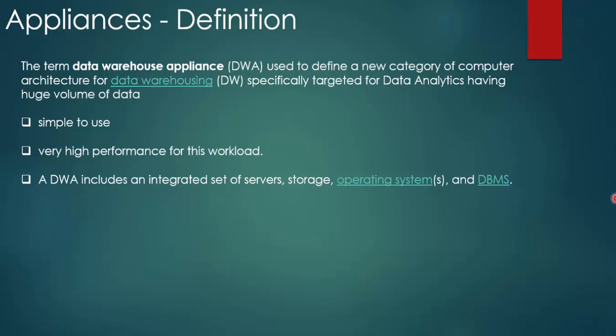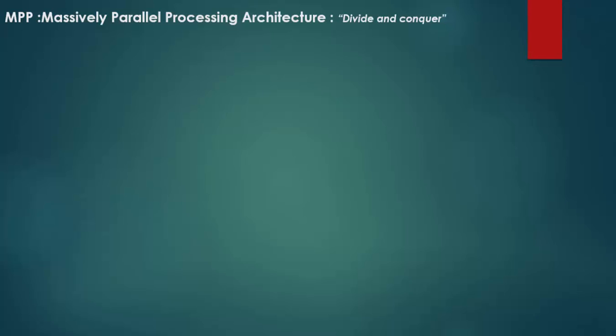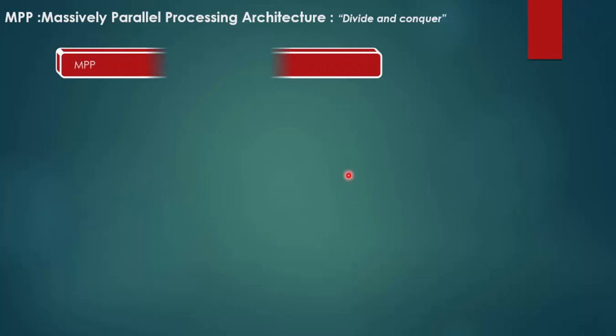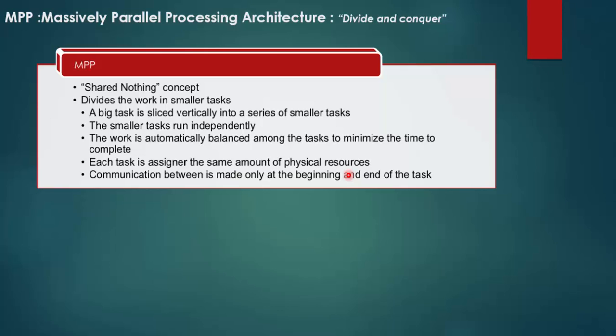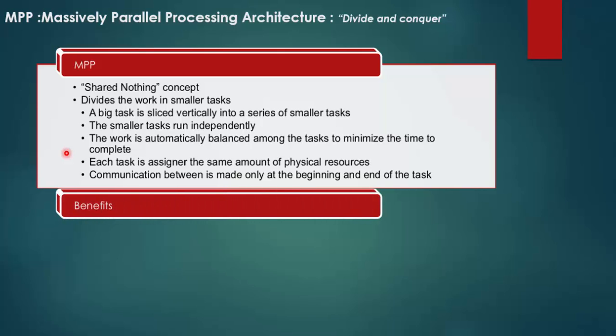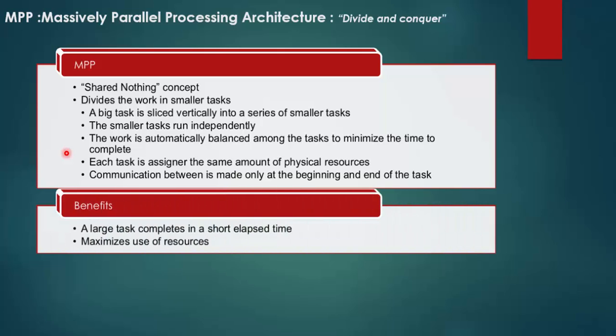So what is the core of the DWA concept? DWA works on massively parallel processing architecture, which means a user sends a request and then the process splits that task into smaller tasks which are given to individual processes. They do their processing in parallel and then give you the result back. It also works on the share-nothing method, dividing tasks into smaller pieces so that communication is made only at the beginning and at the end. If you parallelize your processes, you obviously get a performance boost — that is the big advantage of using the MPP method.